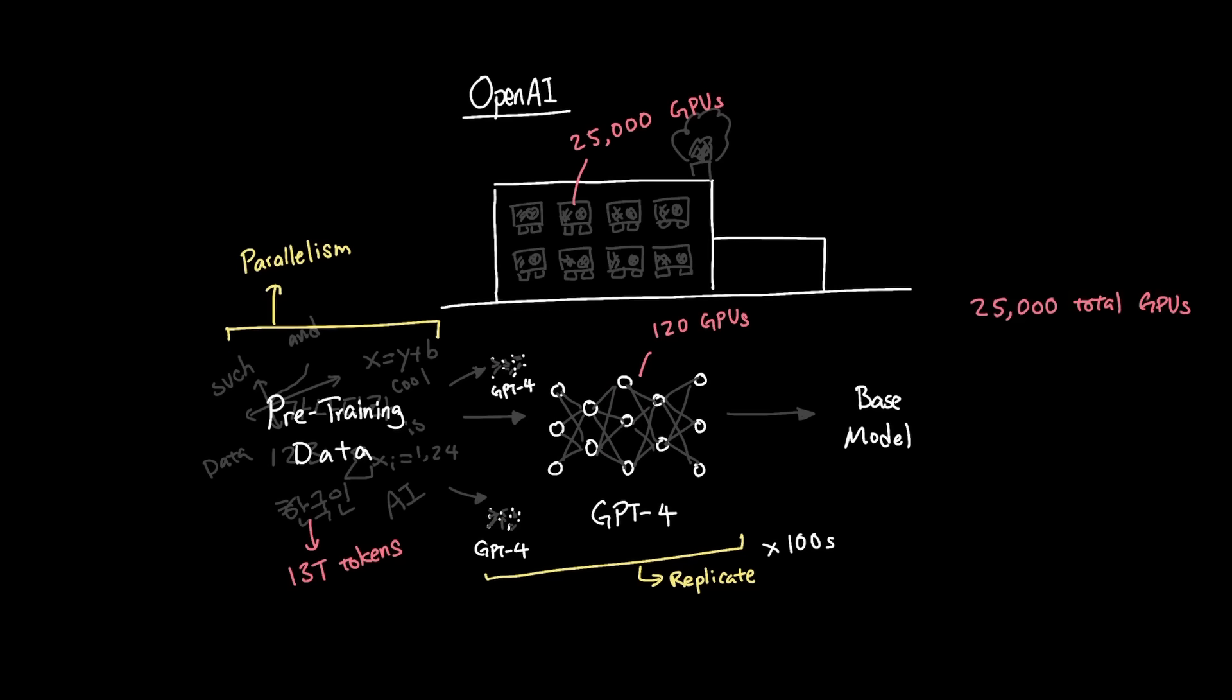Since we have around 25,000 GPUs available to train GPT-4, and each GPT-4 instance that trains needs around 120 GPUs, a simple math shows us that we can have up to around 200 replications of the GPT-4, and now we're utilizing all 25,000 GPUs to pre-train the GPT-4 model.